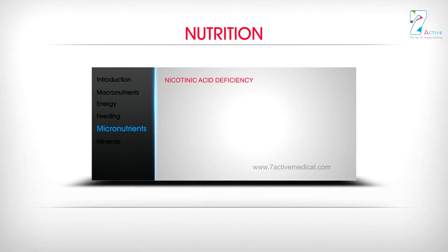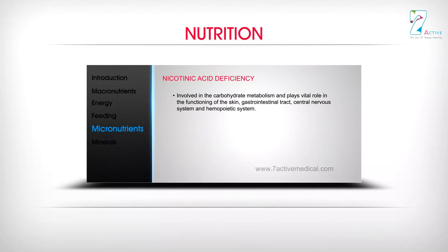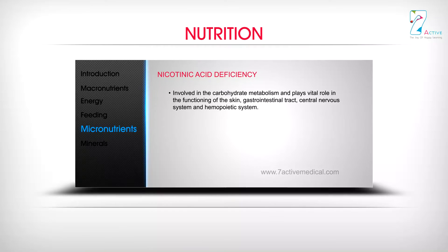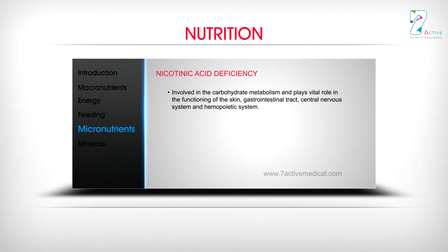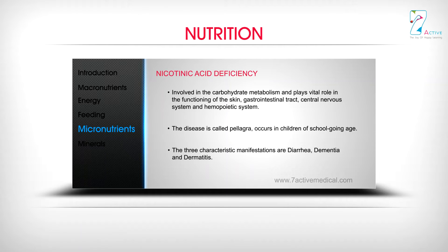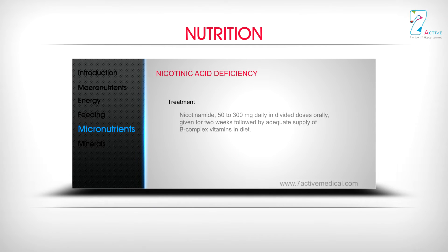Nicotinic acid is involved in carbohydrate metabolism and plays a vital role in the functioning of the skin, gastrointestinal tract, central nervous system, and hematopoietic system. The resulting disease is called pellagra, occurring in children of school-going age. The three characteristic manifestations are diarrhea, dementia, and dermatitis. Treatment consists of nicotinamide 50 to 300 mg daily in divided doses orally for two weeks, followed by adequate supply of B-complex vitamins in the diet.